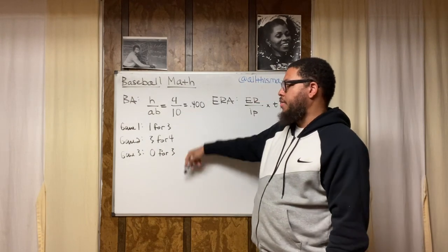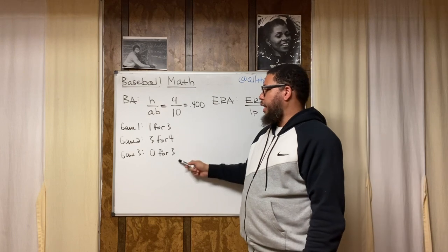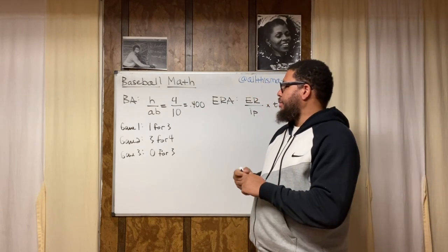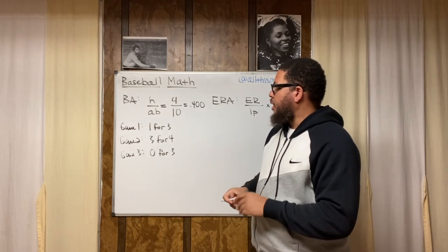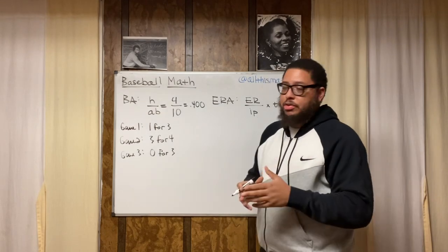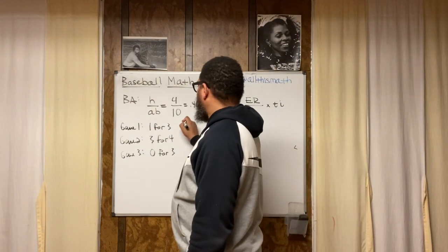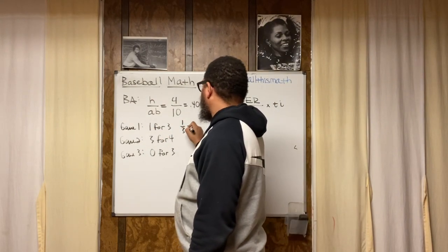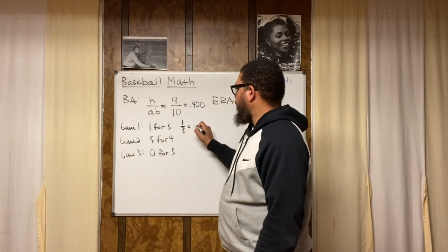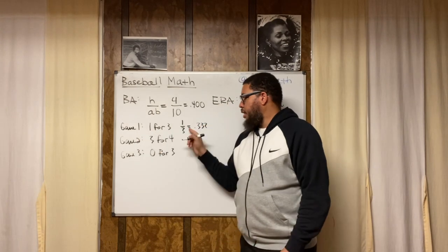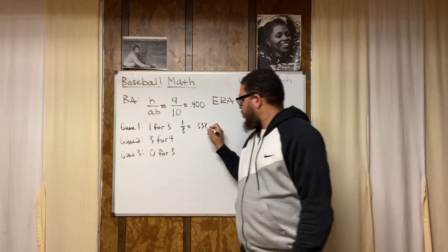But in this scenario, based on this scenario out of these three games, the batting average was 400. But let me do something real quick. I just thought of this. Let's find the individual batting average for each game. So here, one for three would be one divided by three. And I just know off the top of my head, that would be a batting average of 333. So for game one, the batting average was 333.